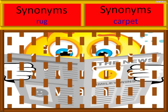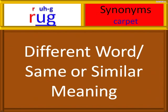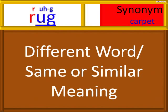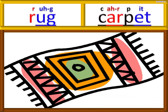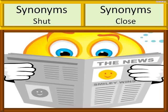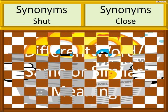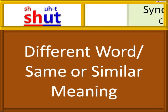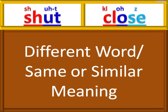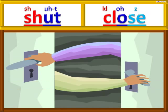A rug has the same meaning as carpet. Rug, carpet. This is a beautiful rug. This is a beautiful carpet. Shut has the same meaning as closed. Shut, close. The door shut. The door closed — same meaning.